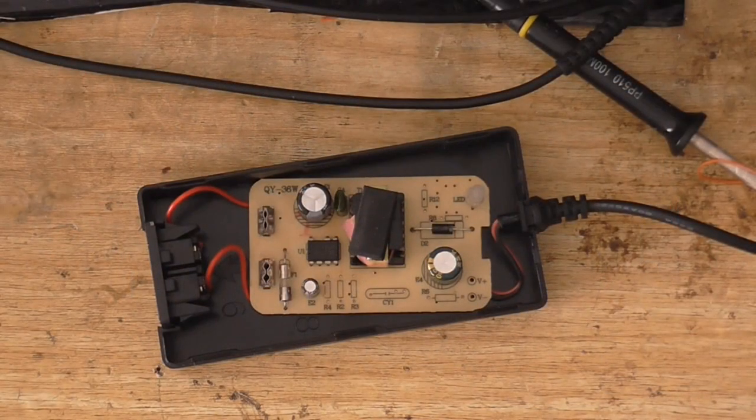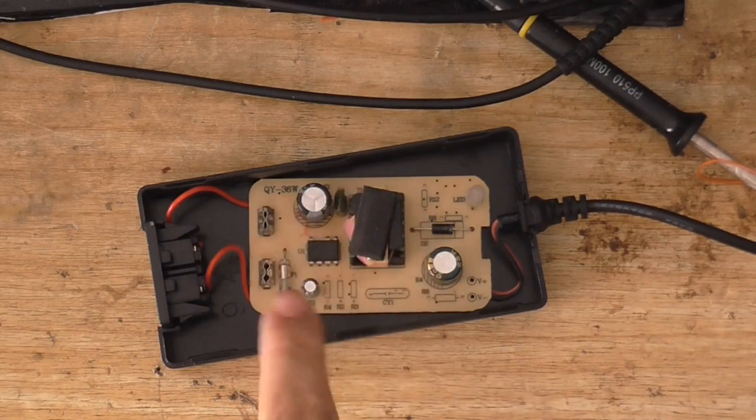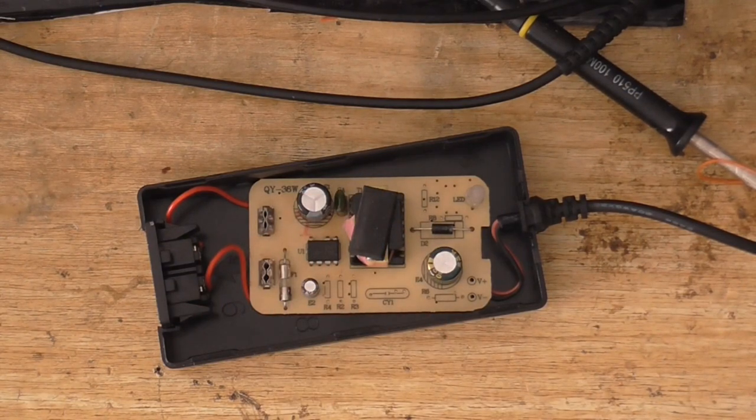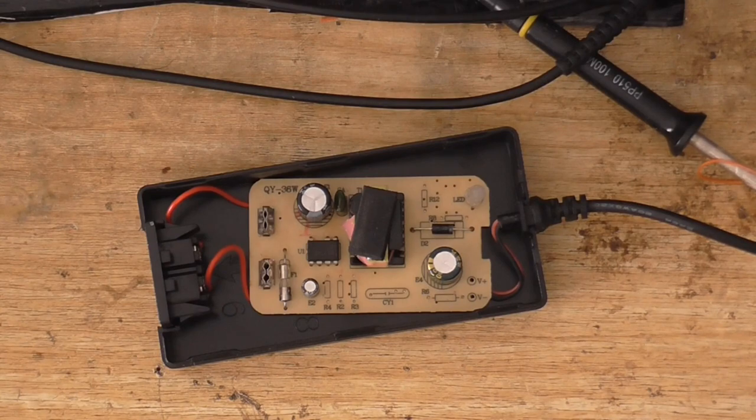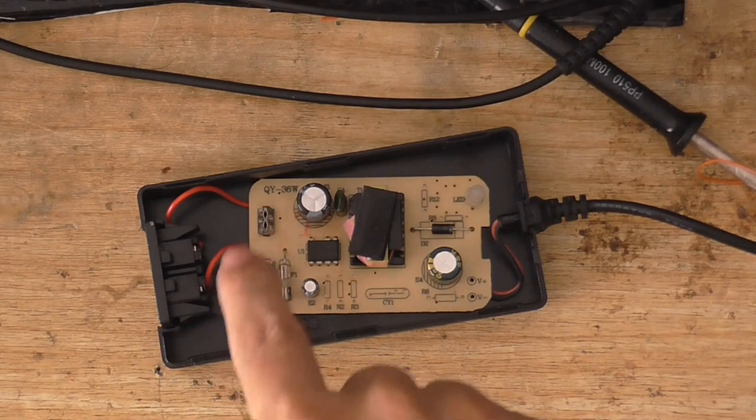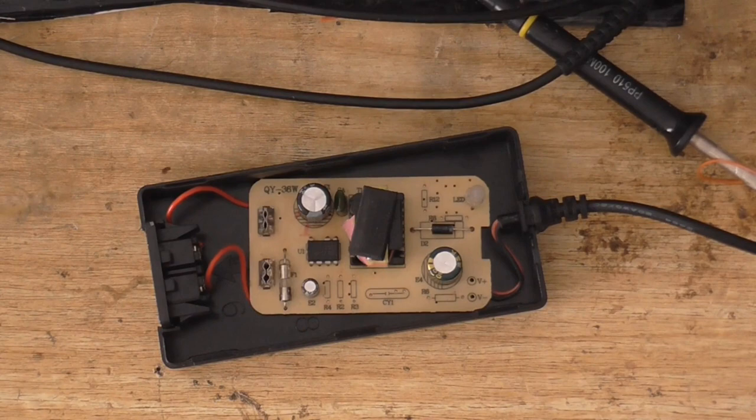So let's see if we can see what's failed in here. At least they've actually used a switch mode power supply. Surprised they're not using a capacitive dropper, you know, with Chinese electronics. You know, I don't even think they've got an inrush limiter on this.